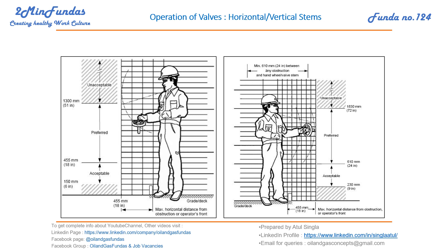If the valve elevation is more than 1300mm, it is not acceptable — it will be very difficult for the operator to operate the valve. Below 455mm, down to 150mm, it is also acceptable, but generally we go for this kind of arrangement in drain valves only. Otherwise, the preferred range is the standard one; this lower range is acceptable only for very small valves and drain connections.